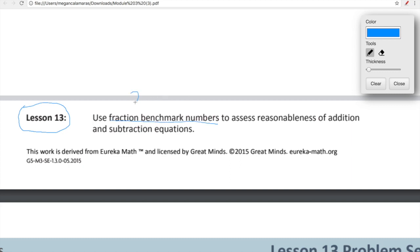First of all, what is a fraction benchmark number? A fraction benchmark number is just a number that's really easy to work with, such as zero, one half, or one. That's all we're talking about there. To assess reasonableness of addition and subtraction equations is just asking: does your final answer make sense, yes or no?